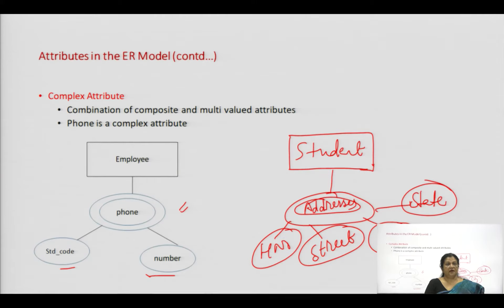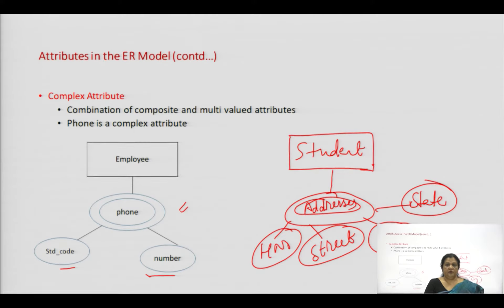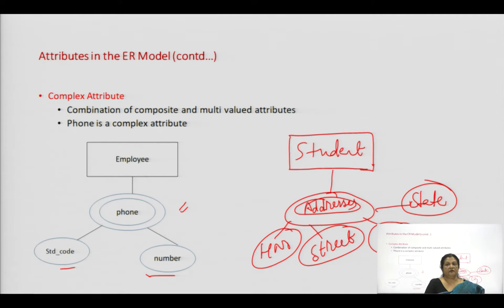These are the different types of attributes in the ER diagram. Which type of attribute we use — whether simple, multi-valued, or stored — actually depends upon the requirement of the database and the type of data in the database.